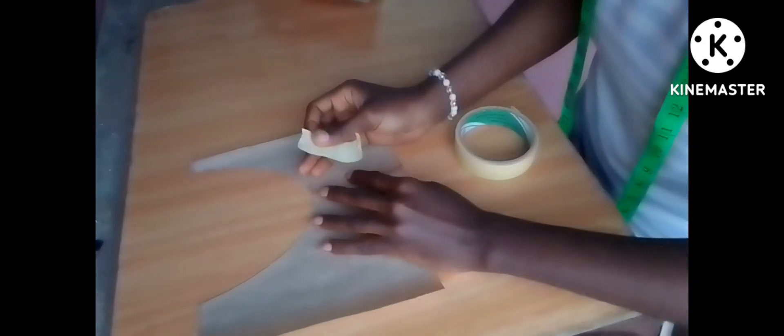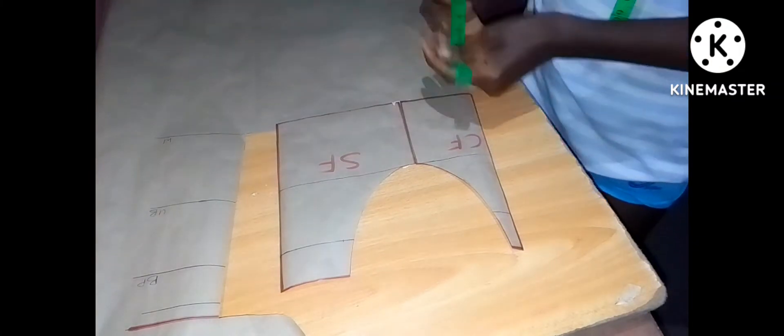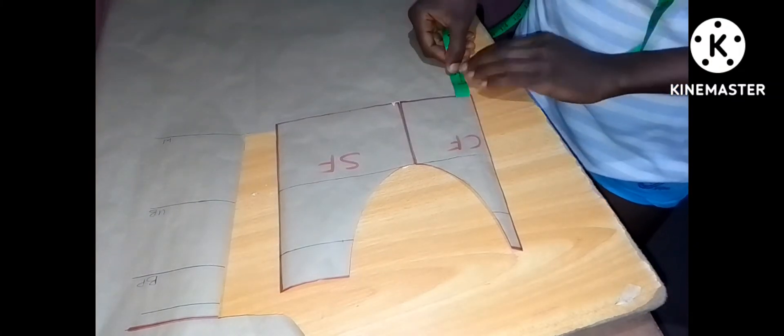Now at this point you might be confused as to what happened to the basque effect, so this is what I'll do. I'll get to the side front and the center front to glue them together. Now, I have already removed the darts, so there will be no need to cut it separately, so I joined it, I'll be cutting it exactly like this.